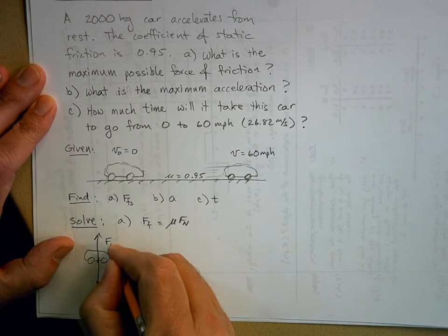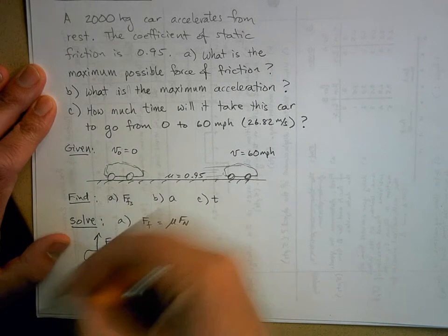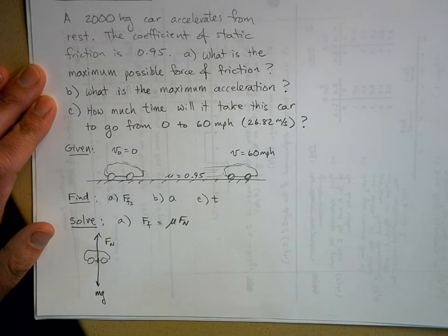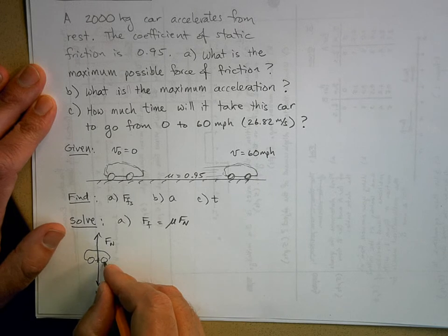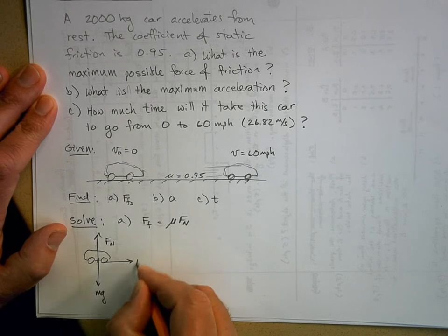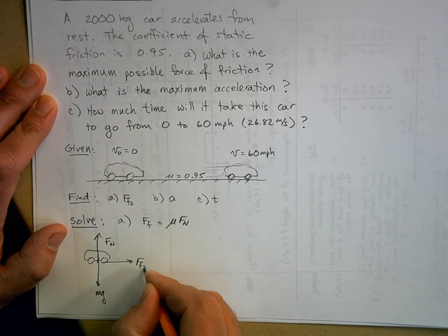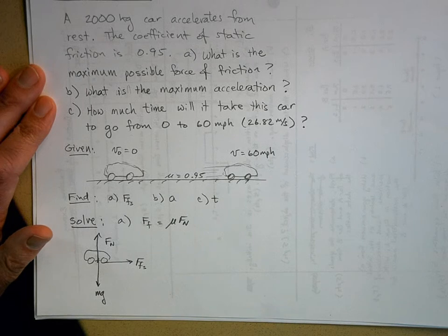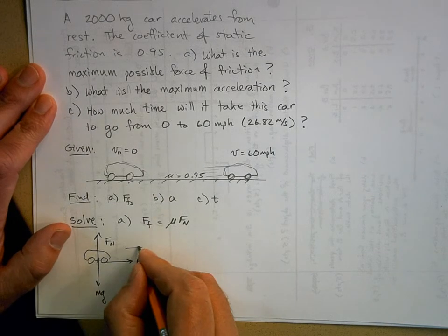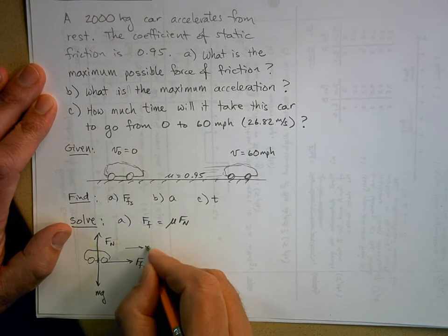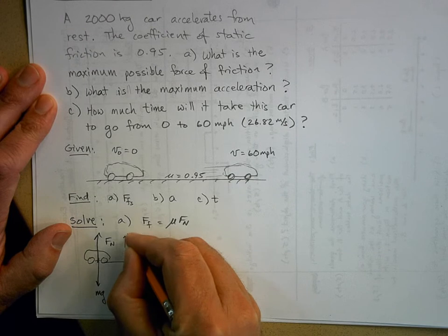We've got gravity pulling it down. The normal force on the wheels, from the ground to the wheels, pushing up, really supporting that weight. And then we've got a static friction force, pushing it to the right.